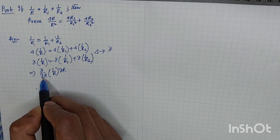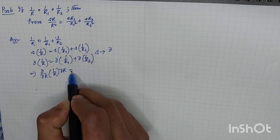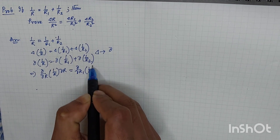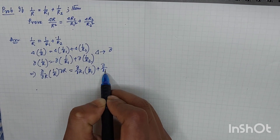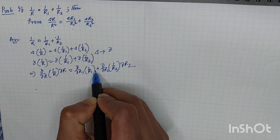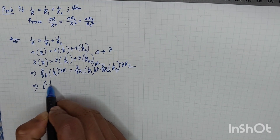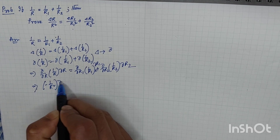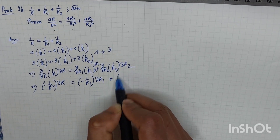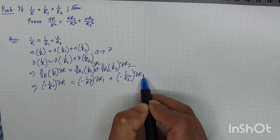Notice that ΔR cancels out, confirming this equals Δ(1/R), so both expressions are the same. Now taking the derivative: d/dR of (1/R) gives −1/R², so we get −(1/R²)ΔR = −(1/R1²)ΔR1 + (−1/R2²)ΔR2.